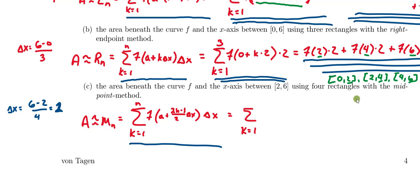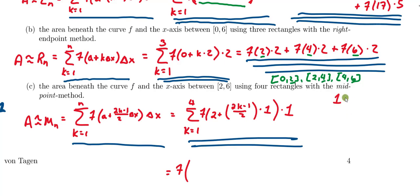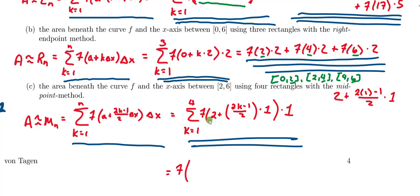Tailoring this for our specific problem: the sum from k equals 1 to 4 of f of (2 plus (2k minus 1)/2 times 1) times 1. The (2k minus 1)/2 part ensures we correctly select the midpoint of each sub-interval. When k equals 1, we get 2 plus (2 times 1 minus 1)/2, which is 2 plus one-half, giving 2.5.